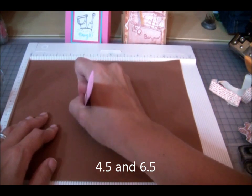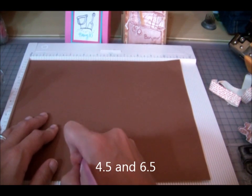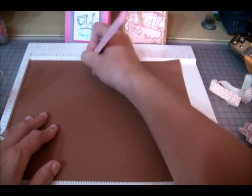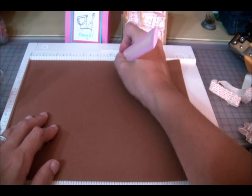You can use a scoreboard or you can use a cutter that allows you to score at certain intervals, however you score. So there's 4.5 and 6.5.